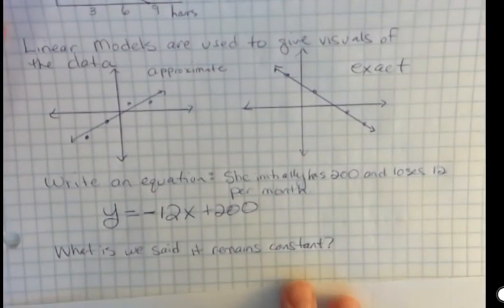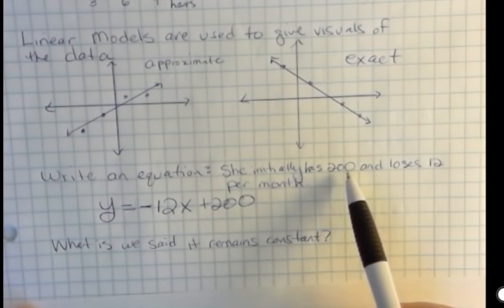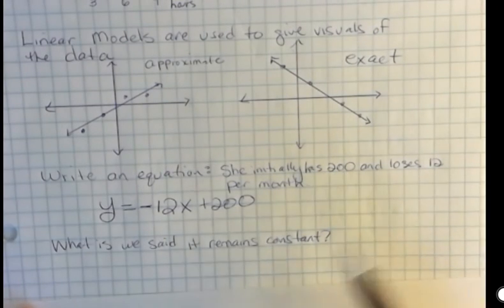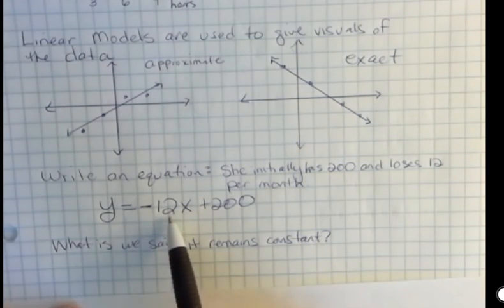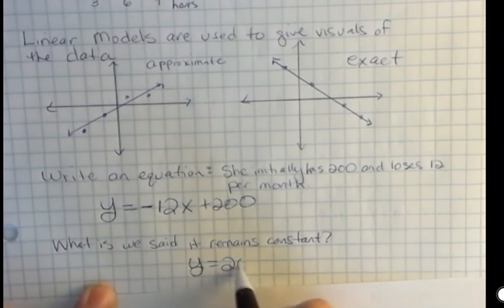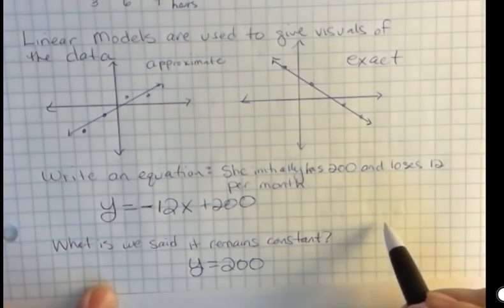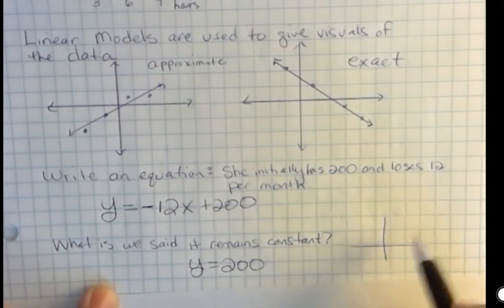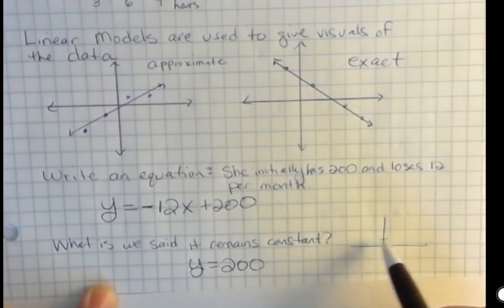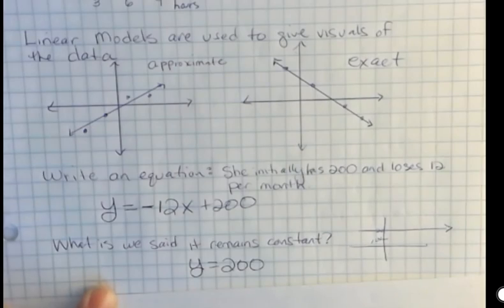What if I said she initially had 200, and then it remained constant? So that just means that there is no change happening per month. It stays the same. And we would just say y equals 200. That's a constant function. We don't have a change. And we know that if I was to look at that, if I look at y equals 200, here's 100, 200, y equals 200 is this. She has 200 and it stays the same.